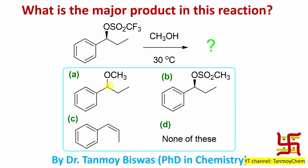That is why SN1 reactions result in racemization. So nucleophilic substitution via the SN1 pathway with racemization is the answer. Looking at the options: no asymmetry is specified, although the carbon is chiral, so the answer corresponds to the racemic (±) product. This is the correct answer.